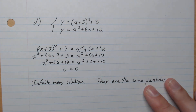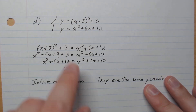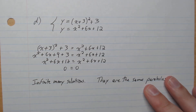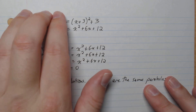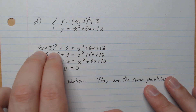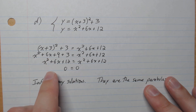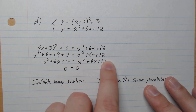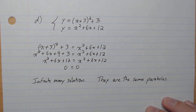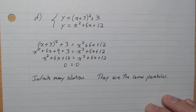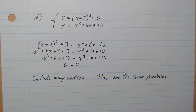Part D: substitute the second equation into the first. After expanding, we notice we get the same thing on both sides; putting it all on one side gives 0 = 0. That means there are infinitely many solutions — the two equations are the same parabola. And that's it — it's that easy. I'll see you guys in the next video.